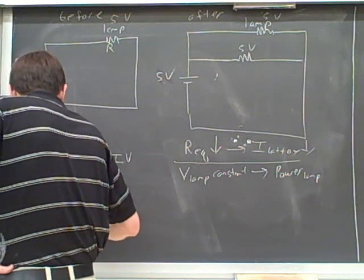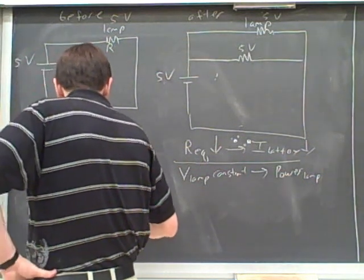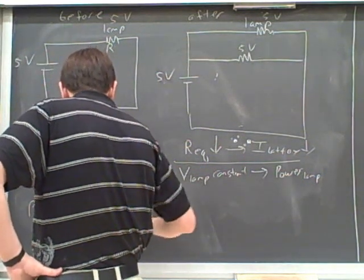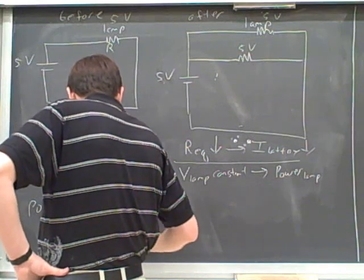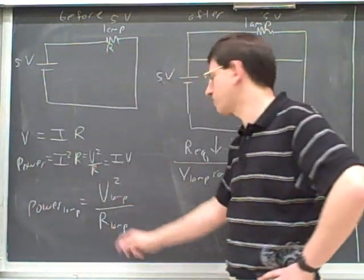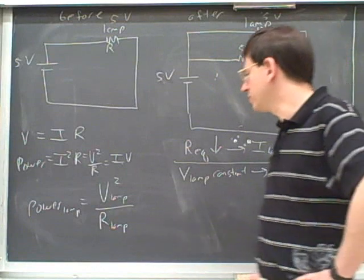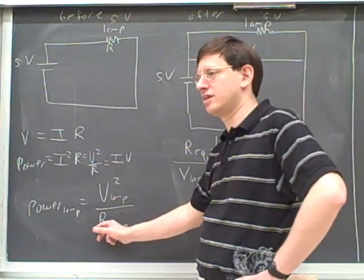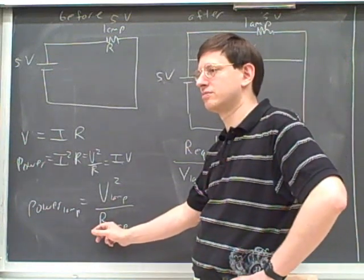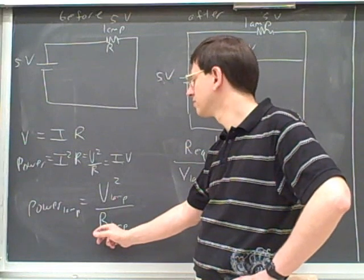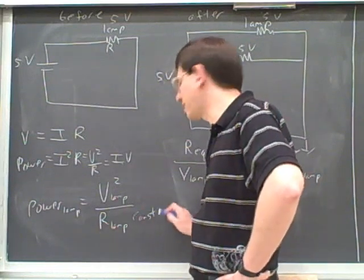Remember, we're trying to find here the power across the lamp. Well, that should be the voltage across the lamp divided by the resistance across the lamp, the voltage squared over the resistance. To review, what's happening to this resistance? So it's the same. The voltage across the lamp is constant.